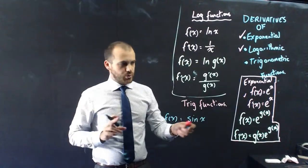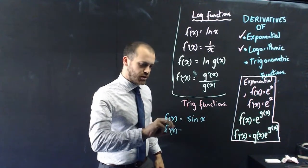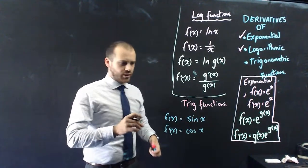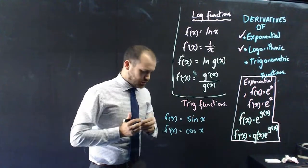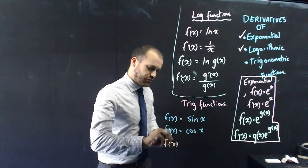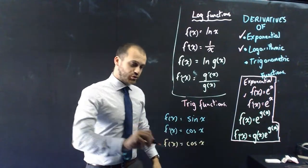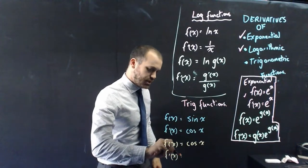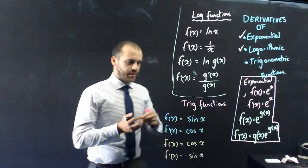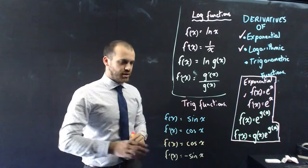Now for trig functions: if f of x equals sin x, the derivative is cos x. You might think the derivative of cos is sin, but it's not. If the original function is cos x, the derivative is negative sin x. So the derivative of sin x is cos x, and the derivative of cos x is negative sin x - two important things to keep in mind.